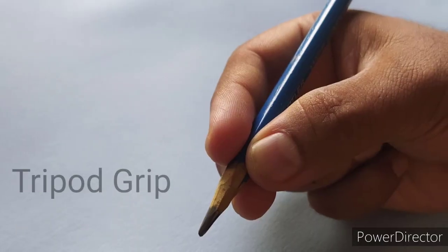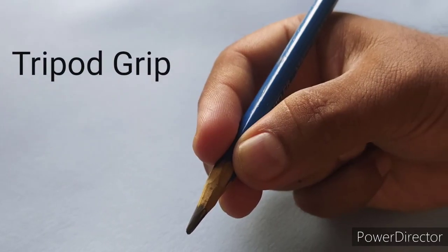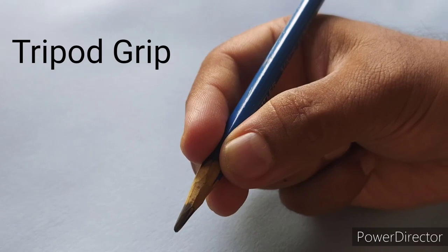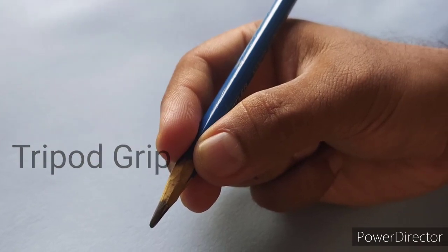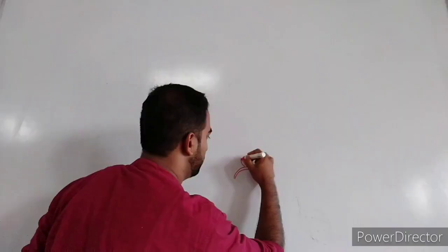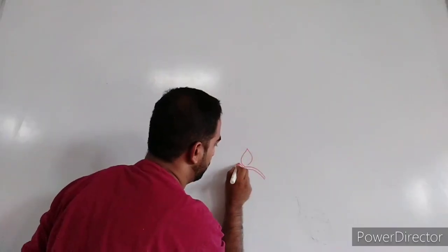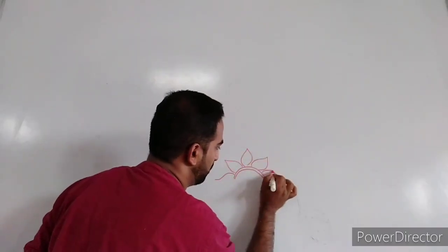First one is the tripod grip. Tripod grip is holding a pencil with your thumb, index and middle finger, like how we hold a pencil to write. This grip helps us to get precise strokes.